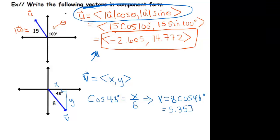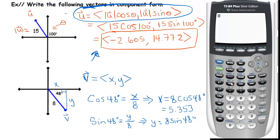And similarly, to get y, we notice that the sine of 48 degrees is equal to y over 8. Which means that y is equal to 8 sine of 48 degrees. So we put that in the calculator and we get 5.945.